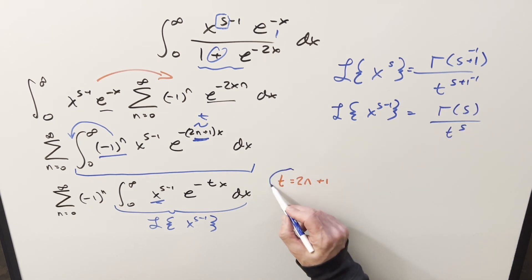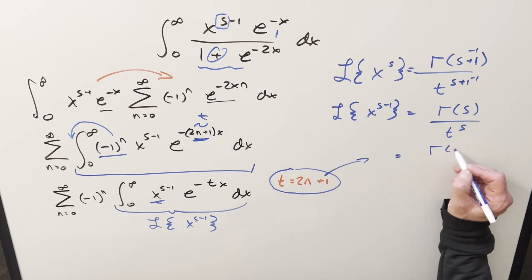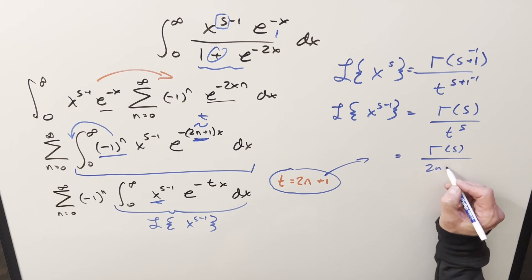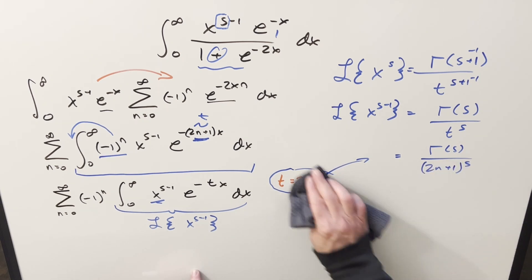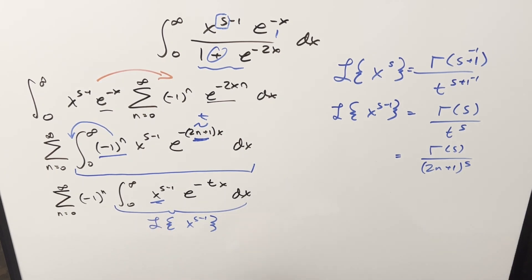But now let's take it and put it back in terms of n with this t value. So if we do that and plug in 2n plus 1, we're going to have gamma of s over 2n plus 1 all to the s. So we can take this value here, put it back into the sum. We're all set with this integral now. So what's going to happen is we have here the sum from n equals 0 to infinity minus 1 to the n. And all this stuff, gamma of s over 2n plus 1 to the s.